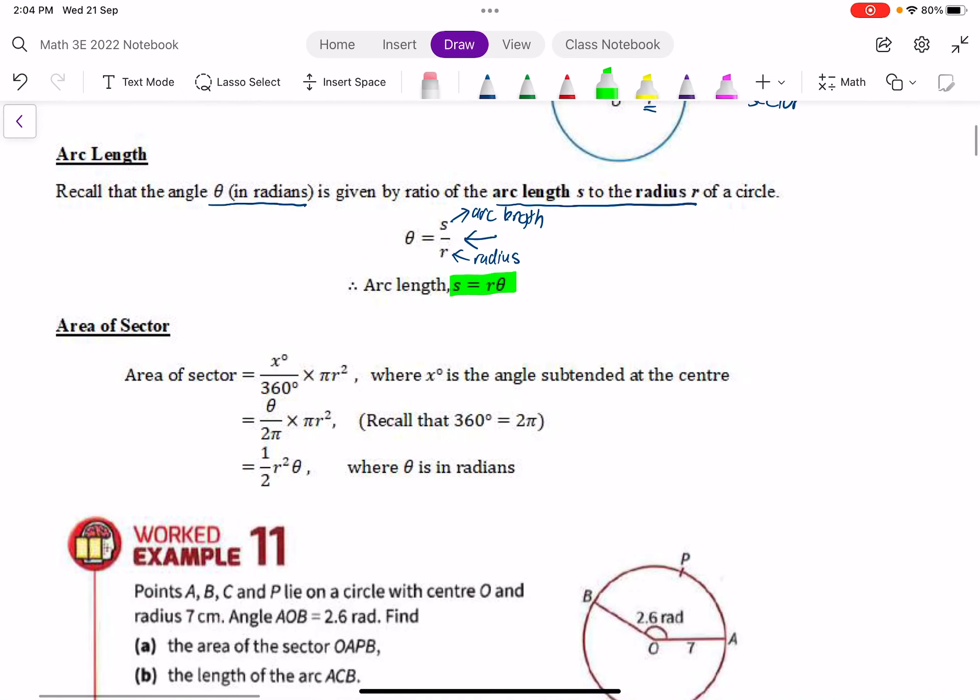Next, area of a sector. Recall that area of a sector is given by X, the angle X in degrees, divided by 360 times pi R squared. Recall that pi R squared is the area of the circle.